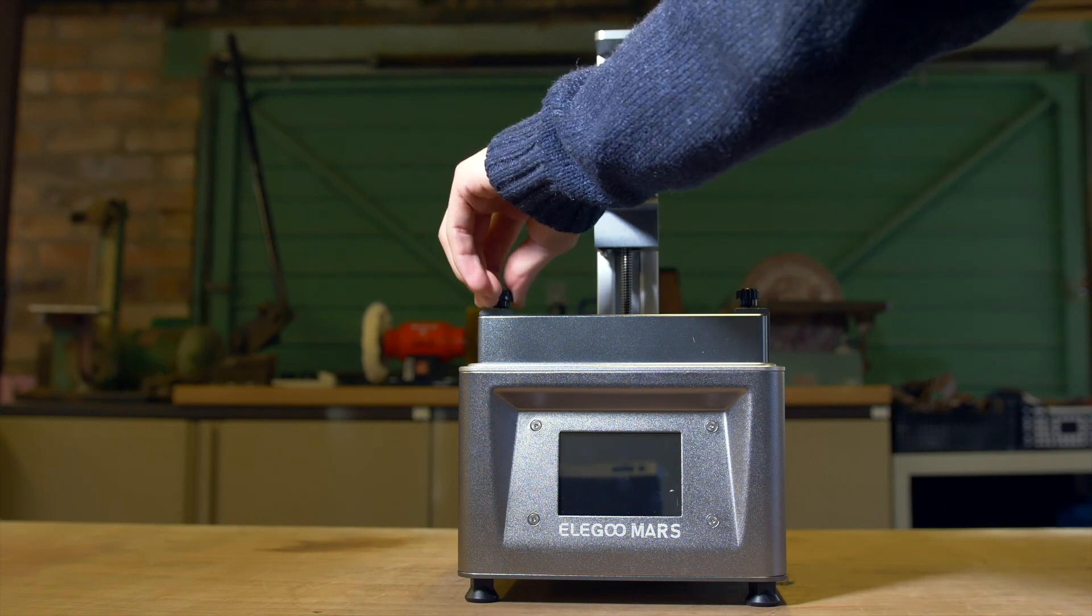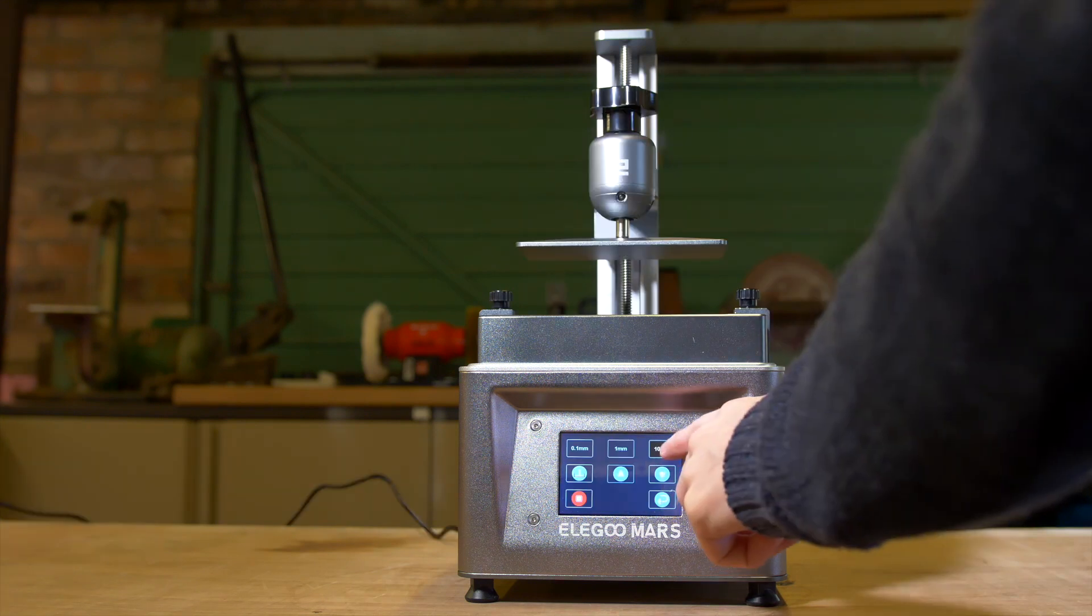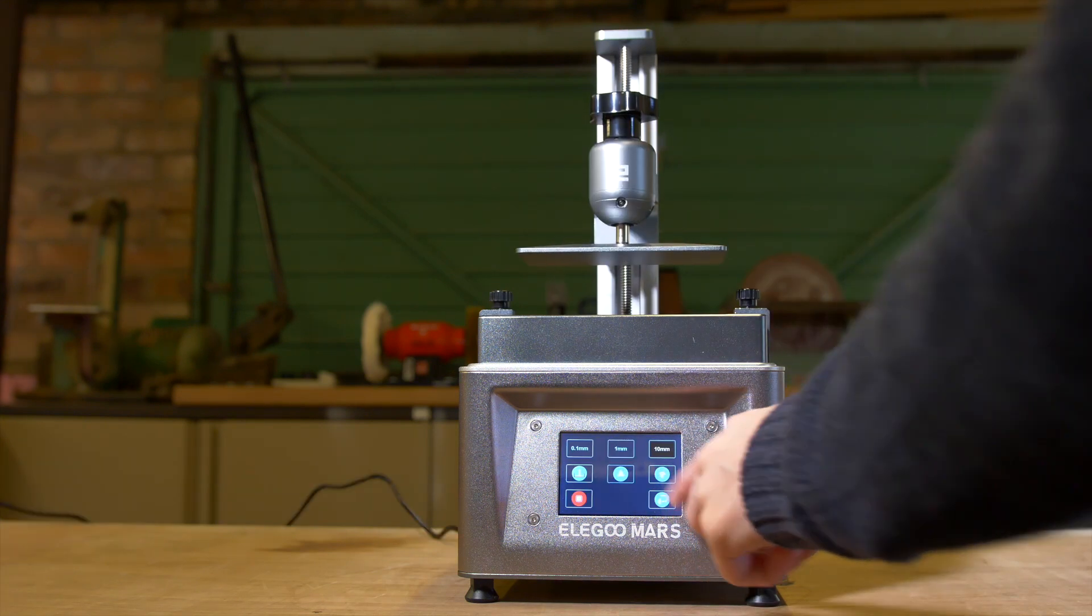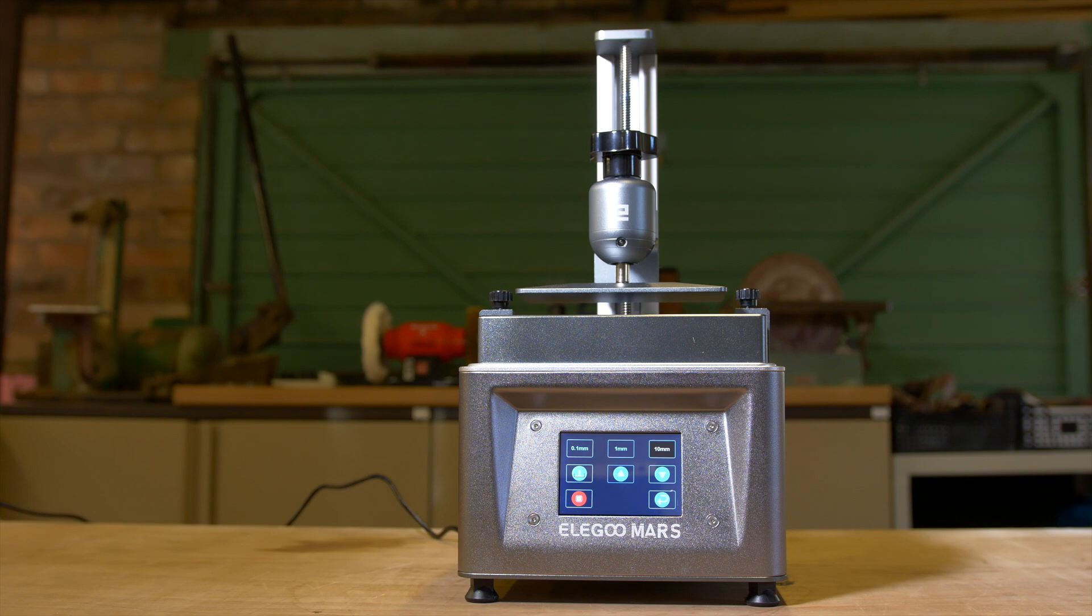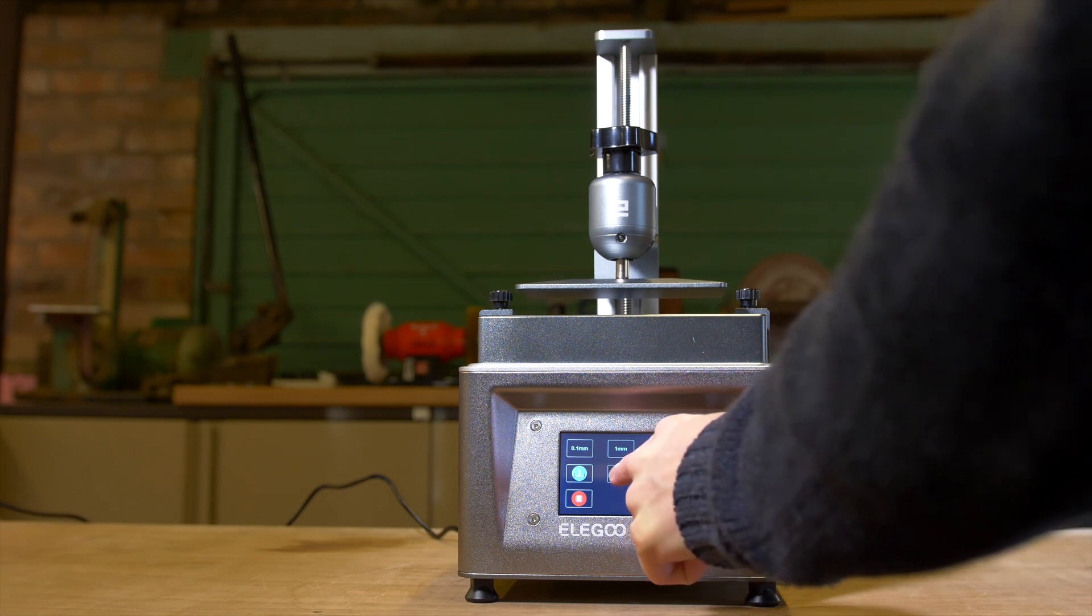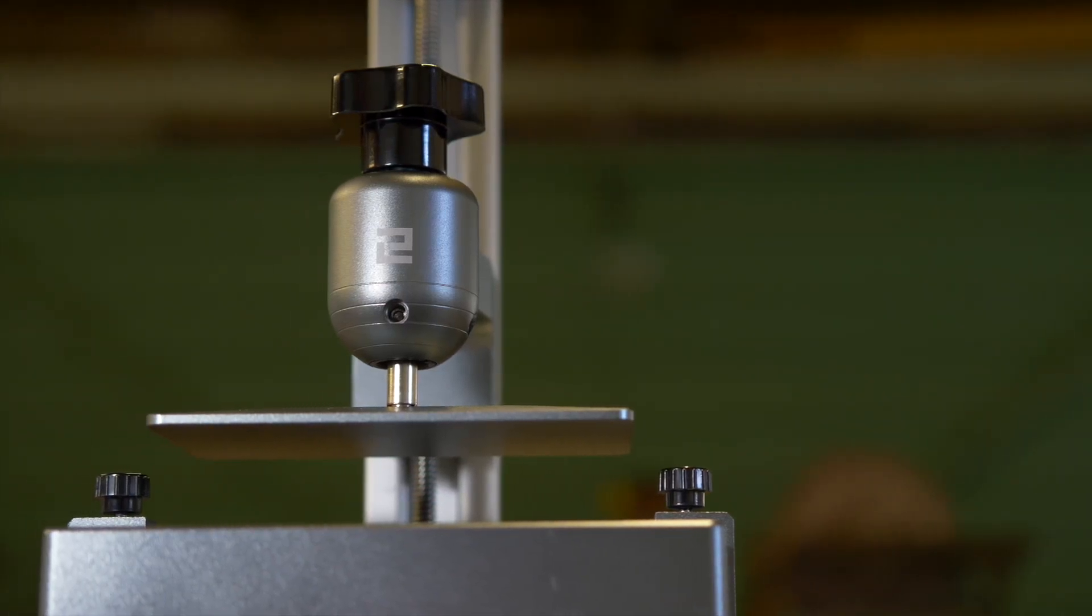It features a 1 inch per hour maximum print speed, 100 micron layer heights, 2560x1440 2K 5.5 inch LCD, 3.5 inch color touchscreen, 40 watt UV LED bulb and it uses stereo lithography or SLA 3D printing technology.